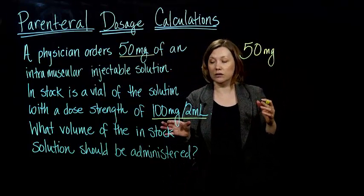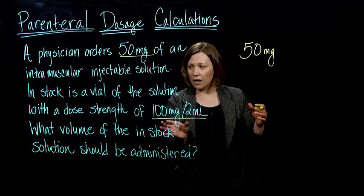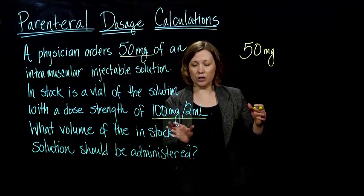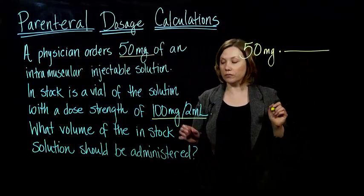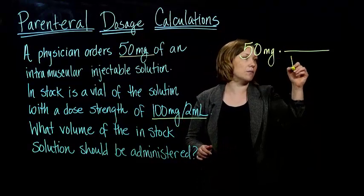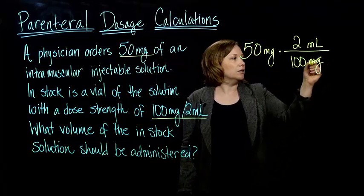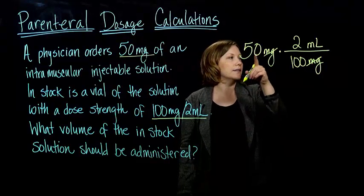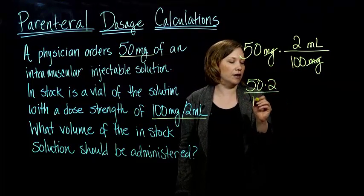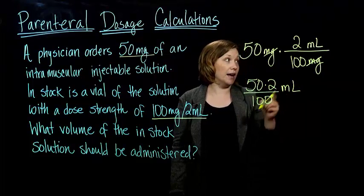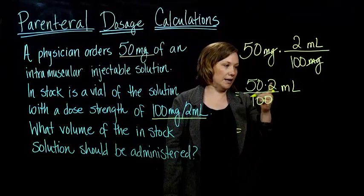I need to convert this to milliliters using my on-hand dose strength. I'm going to multiply this just like we did in the last section. I'm going to put the milligrams on the bottom, because I want them to cancel out, and the milliliters on the top. So the milligrams cancel out, and then I just have to do 50 times 2, divide by 100. I ended up with milliliters, because everything else canceled out. When I multiply and divide, I get 1.